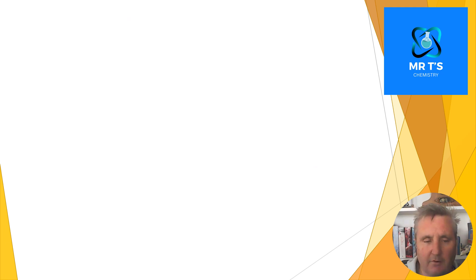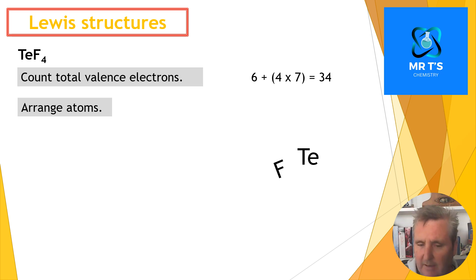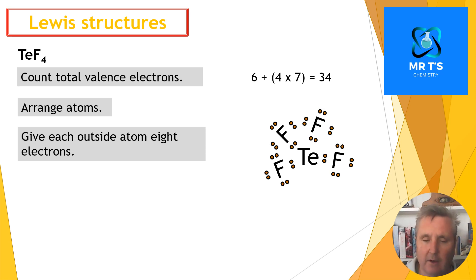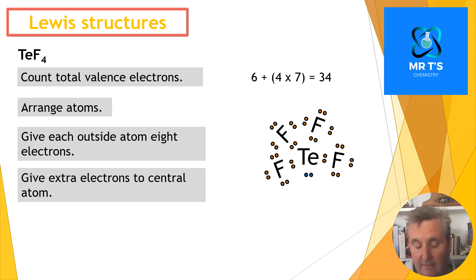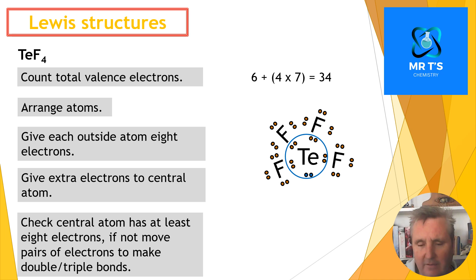Let's have a look at the next one. This is TeF4. Count the total number of electrons: Te is in group 16, so we have six electrons from that, and fluorine is in group 17, so it has seven. Four times seven plus six is 34. Arrange the atoms: Te in the middle, fluorines around the outside, and then eight electrons around each fluorine. That's 8, 16, 24, 32. I've used 32 electrons; I've got two left.